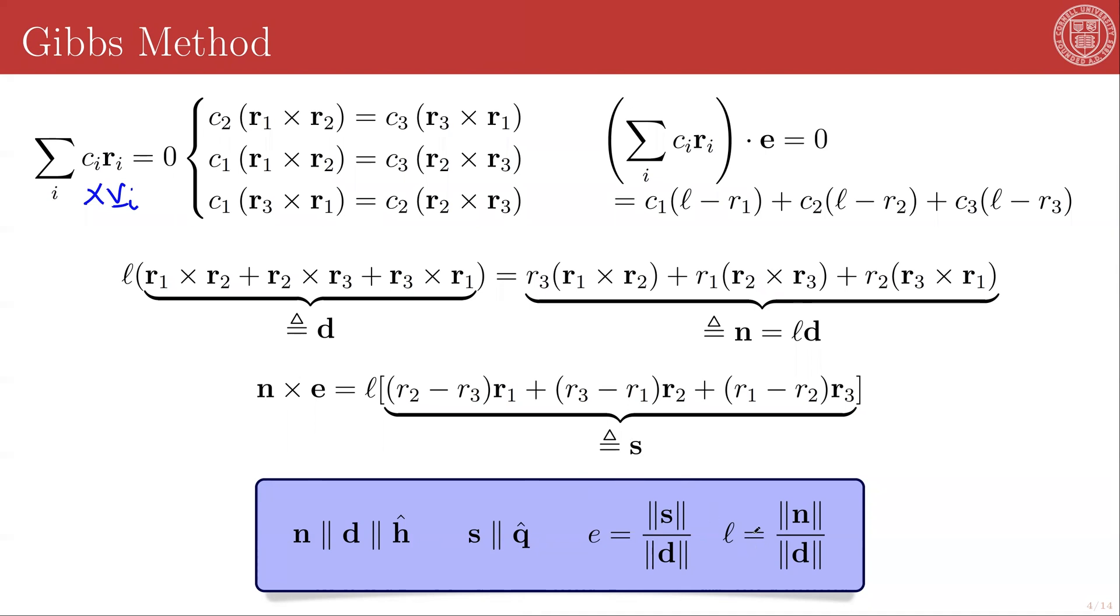The semi-latus rectum of the orbit is given by the ratio of the magnitude of this n vector to the d vector, and the eccentricity is the ratio of the magnitude of the s vector to the magnitude of the d vector. All three of these vectors, n, d, and s, are formed directly from the original measurements, r1, r2, and r3, or from calculations via Gauss's method.